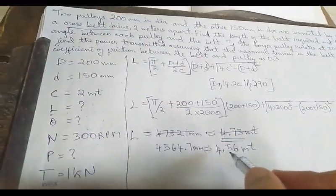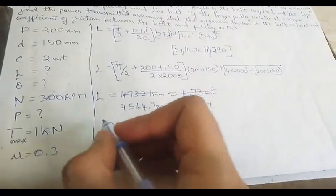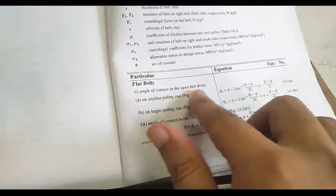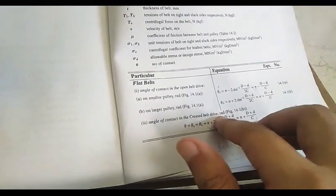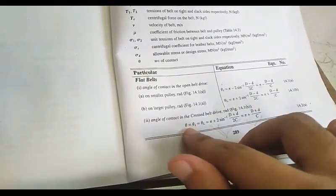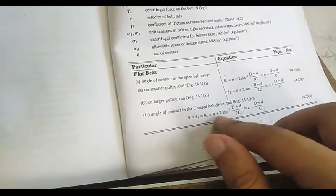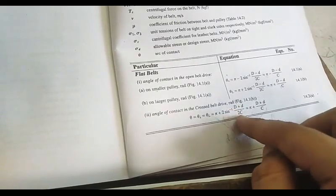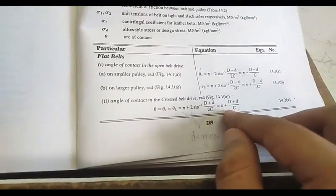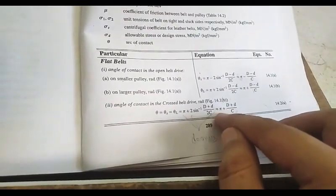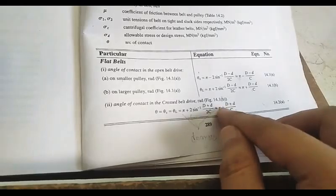Next we find the angle of lap. From page 289, the data handbook gives the angle of contact for open belt drive and for cross belt drive. Since our problem is a cross belt drive, we use the cross belt formula. There are two versions: one in degrees and one in radians. We need the value in radians, so we select the radian formula.